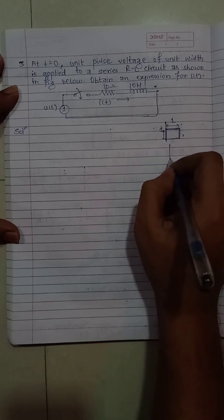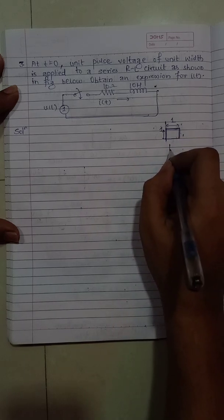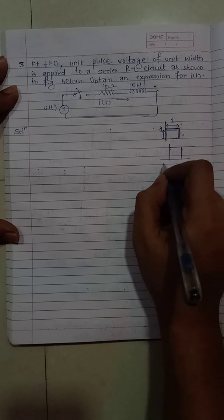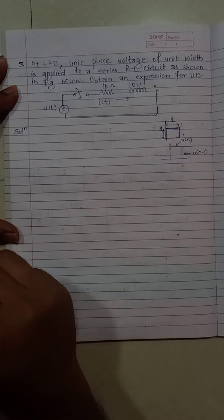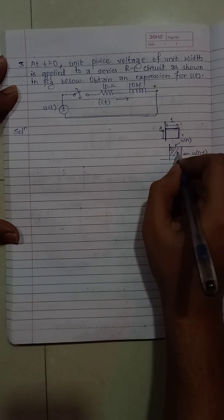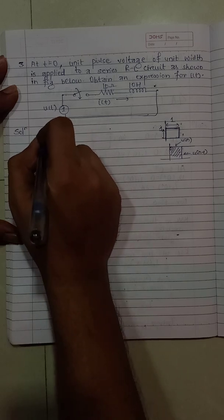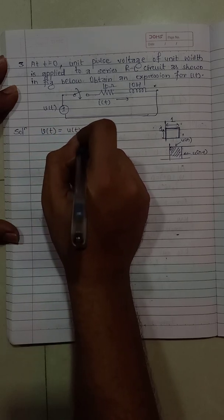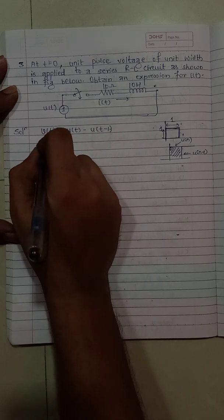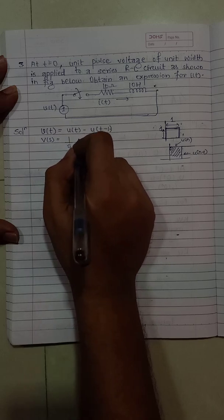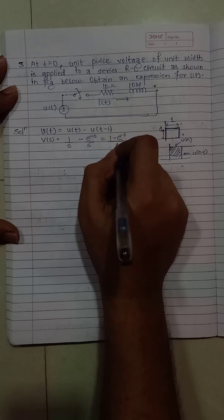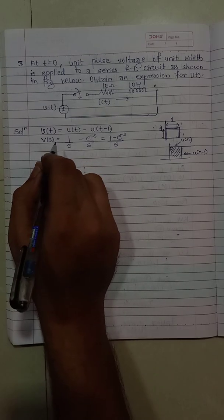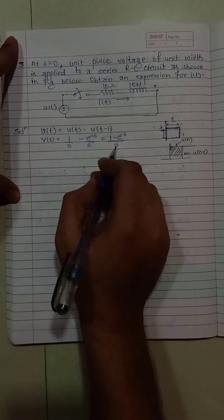To get such a signal, I'll take a unit step function and subtract an advanced unit step. This gives u(t) minus u(t-1), which produces the unit-width portion. So from the question, v of t equals u(t) minus u(t minus 1), or in the s-domain it will be 1 by s minus e raised to minus s by s, which I can write as (1 minus e raised to minus s) divided by s. Initially all values are zero because the switch is open.